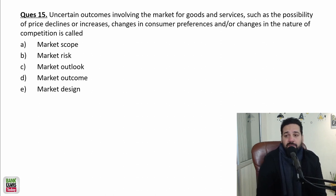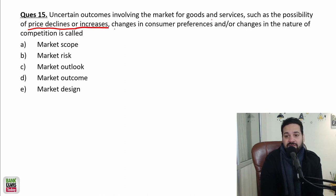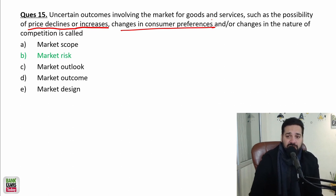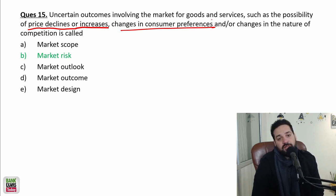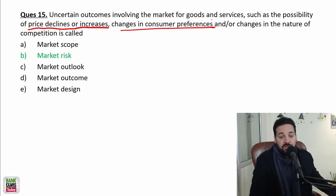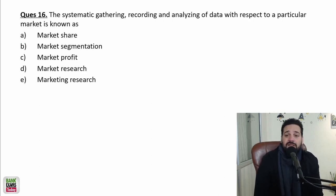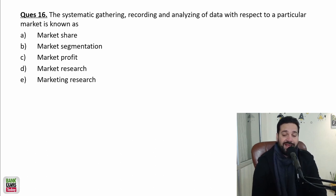Uncertain outcomes involving the market for goods and services — such as the possibility of price decline or increase, or changes in consumer preferences — that is market risk. For example, consumers may be into bell-bottom jeans right now, but after 3-4 months nobody buys them. If you manufactured a lot of bell-bottoms, you're stuck with them. Systematic gathering, recording, and analyzing of data with respect to a particular market is known as marketing research.